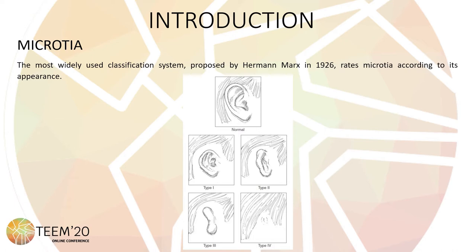The most widely used classification system, proposed by Hermann Marx in 1926, grades microtia according to its appearance, as shown in the figure: type 1, type 2, type 3, or type 4 microtia.